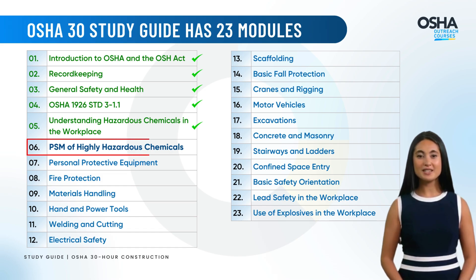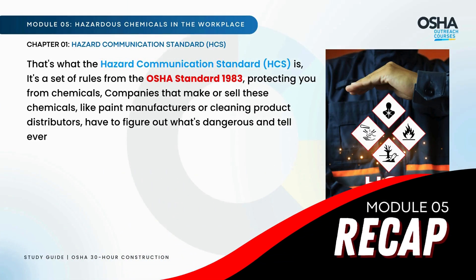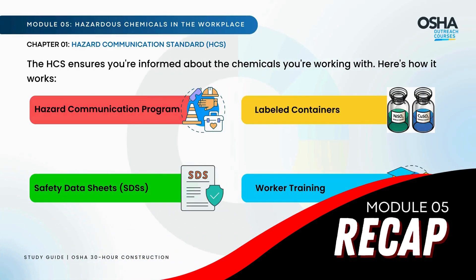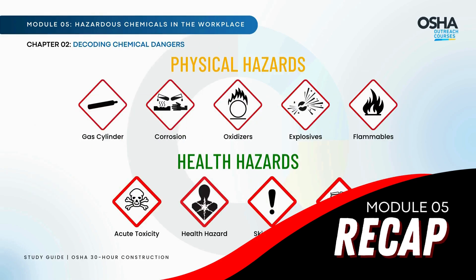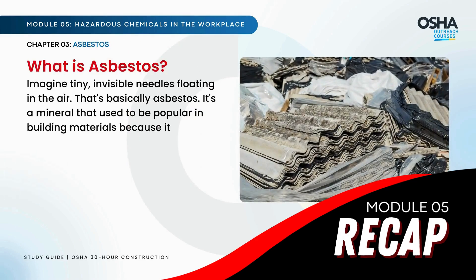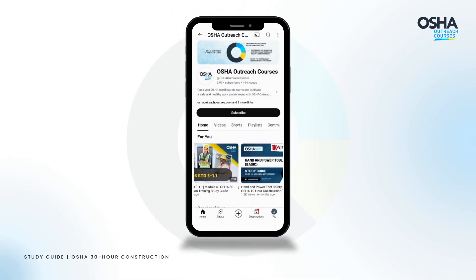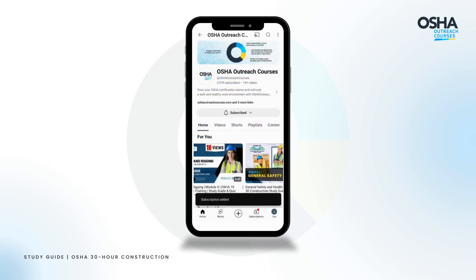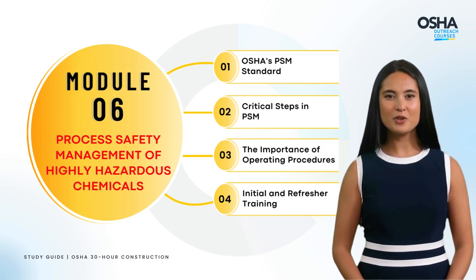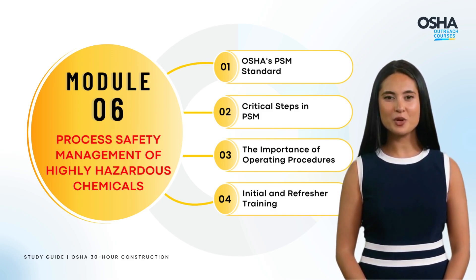Today we are diving into Module 6 about PSM, or process safety management of highly hazardous chemicals. Here is a recap of Module 5, covering topics like creating safety data sheets, MSDS labeled containers, and handling hazardous materials. Make sure you're subscribed and hit the notification bell. Today we explore PSM standards, critical steps, the importance of operating procedures, and training — essential for anyone working with hazardous chemicals.